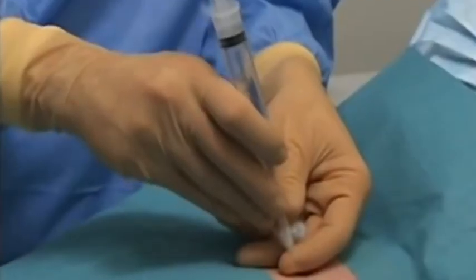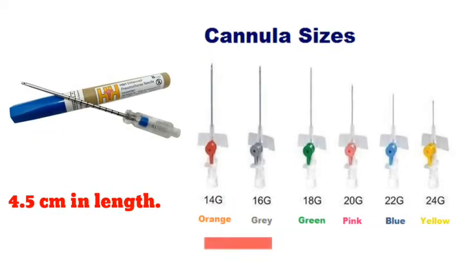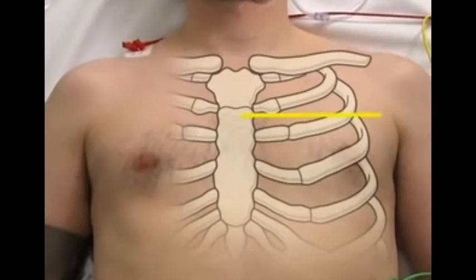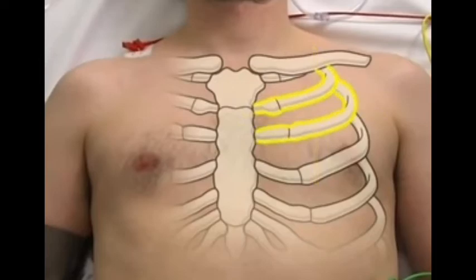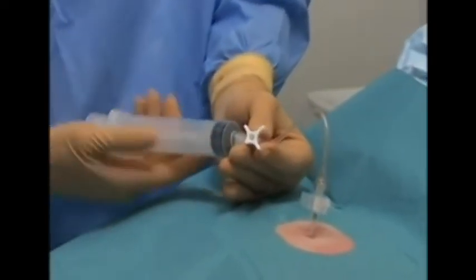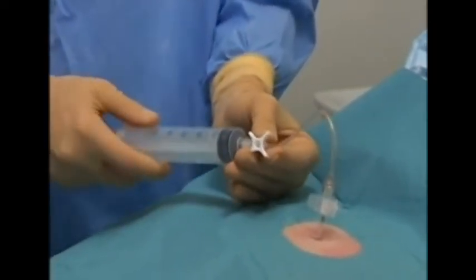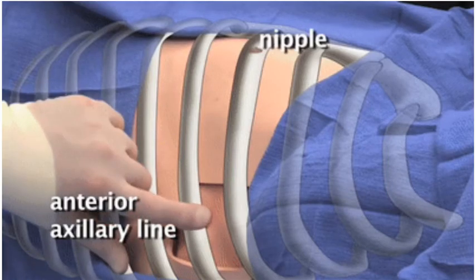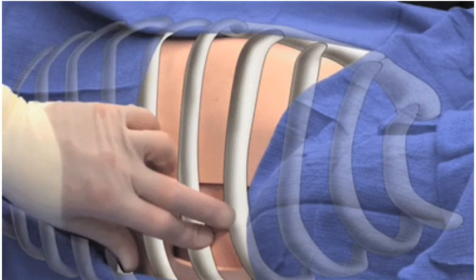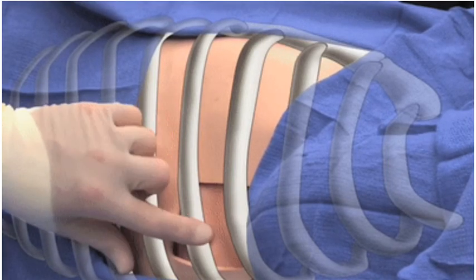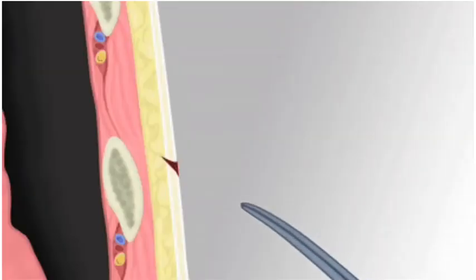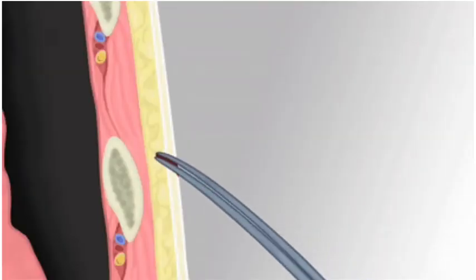Needle decompression is usually performed with a 14–16 gauge, 4.5 cm length angiocatheter, just superior to the rib in the second intercostal space in the midclavicular line. Then after needle decompression, or for stable pneumothoraces, the treatment is insertion of a thoracostomy tube, placed above the rib in the fifth intercostal space, anterior to the mid-axillary line.